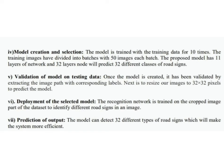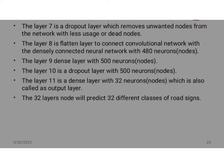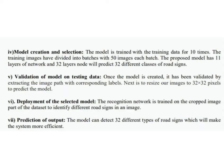For model creation and selection: the model is trained with the training dataset for 10 epochs. The training images are divided into batches of 50 images each. The proposed model has 11 layers of network and 32 node layers to predict 32 different classes of road signs. Once the model is created, it is validated by extracting the image path with corresponding labels, then images are resized to 32×32 pixels to predict the model. For deployment, the recognition network is trained on the cropped image part of the dataset to identify different road signs in an image.